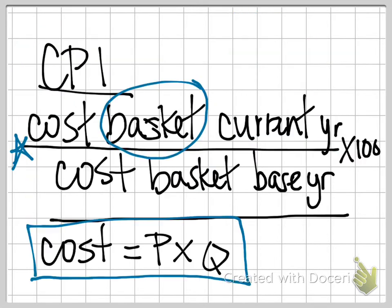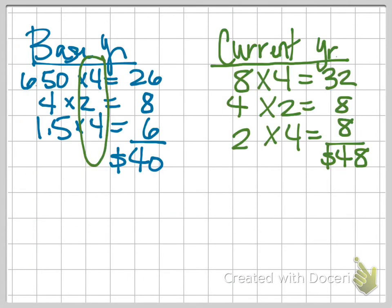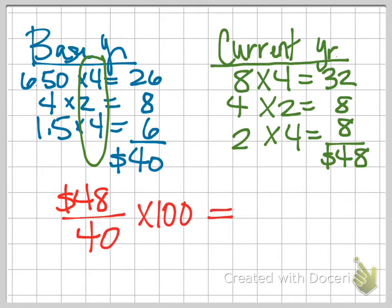So remember going back to the formula, cost of the basket in the current year divided by the cost of the basket in the base year. So the current year is the $48 divided by the $40 times 100. And if you pop this into a calculator, you would see that our CPI is 120.